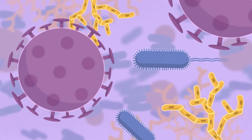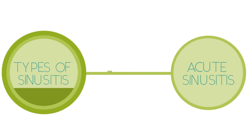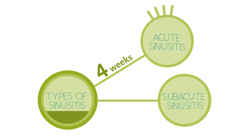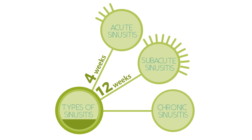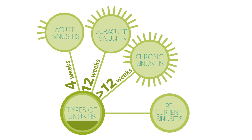Unable to circulate air and eliminate the secretions that are produced, obstructed sinuses become an ideal environment for bacterial infection. Types of sinusitis include acute sinusitis, which lasts up to 4 weeks; subacute sinusitis, which lasts 4 to 12 weeks; chronic sinusitis, which lasts more than 12 weeks and can continue for months or even years; and recurrent sinusitis, with several attacks within a year.